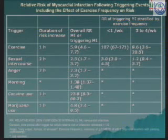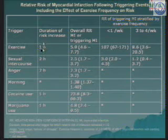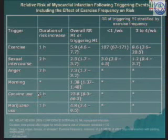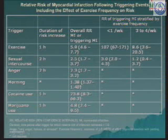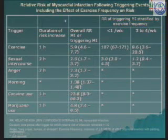Looking at the relative risk of developing myocardial infarction following triggering events: if a patient undergoes heavy exertion, the chances of developing MI are maximum in the first hour. For sexual intercourse or a bout of severe anger, the risk is highest in the next two hours. For cocaine or marijuana use, the relative risk of developing an acute coronary syndrome is maximum in the first hour after substance abuse. The relative risk of exercise triggering an MI is 5.9, compared to about 2 to 2.5 for sexual intercourse and anger. Cocaine abuse carries a 23.8 times higher risk of triggering an acute coronary event.